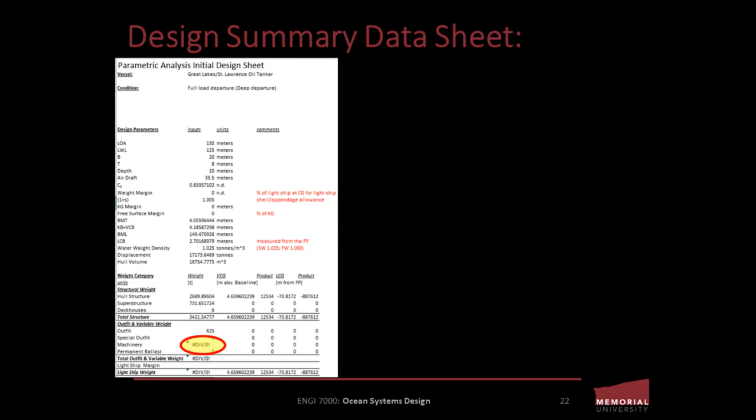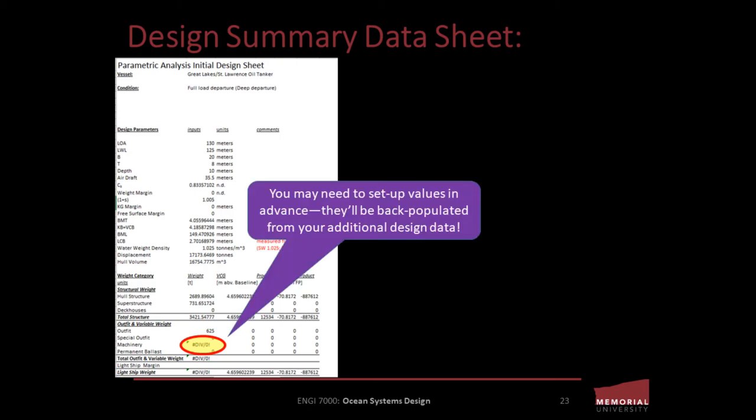As you go through a parametric design, you may find yourself backtracking. For instance, your machinery weight might use an empirical value based on a maximum continuous rating, but you won't evaluate your maximum continuous rating until you estimate your resistance and propulsion characteristics. The use of secondary design sheets allows you to create placeholder or dummy variables to define cells that haven't yet been populated, allowing you to reference these in your other parametric equations and other sheets. The result is that your design may develop non-linearly, and you should be aware of this going into it.